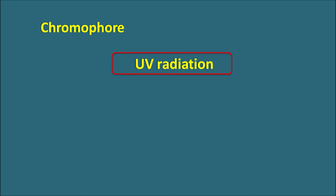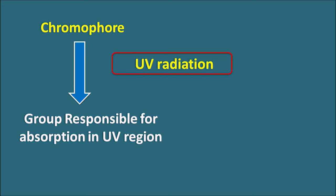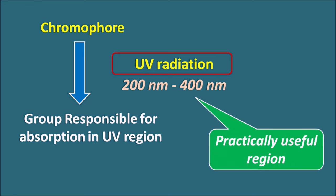With respect to UV radiation, let us define the term chromophore. Chromophore is the group in the molecule which is responsible for absorption within the UV region. The UV region can be divided into two categories. The main UV region used for spectroscopic examination is from 200 nm to 400 nm — this is called the real UV region, which is practically useful for spectrophotometric studies. Less than 200 nm is called the vacuum UV region, where we cannot study absorption because of interference with solvents, as many solvents absorb within that region. Therefore, practically we study UV absorption above 200 nm.